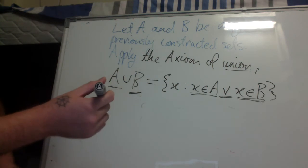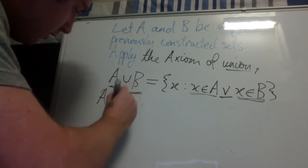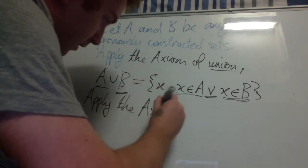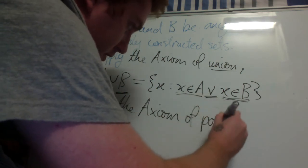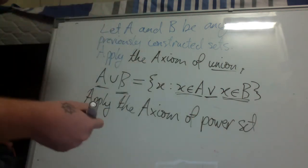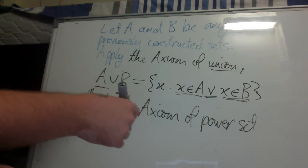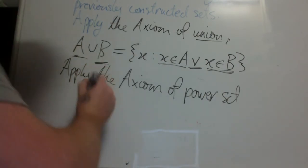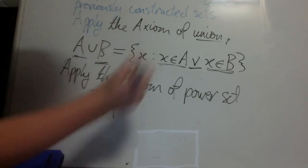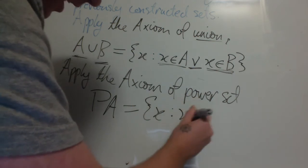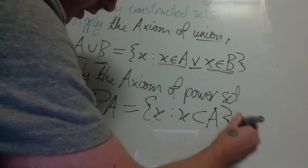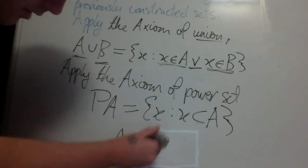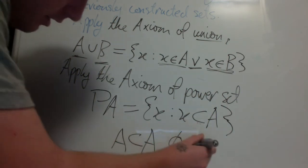So there's another axiom called the power set axiom. So the power set of any given set is the set of all subsets of that set. So the power set of A is equal to all x such that x is a subset of A. As I've said previously, for all A, A is a subset of A, and the empty set is a subset of A.